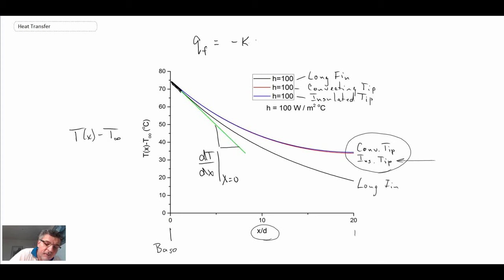And so through Fourier's law, if you know that slope, you can then determine the amount of energy being withdrawn, specifically qf. And that is the heat transfer from the fin. So that is the case of h equals 100.